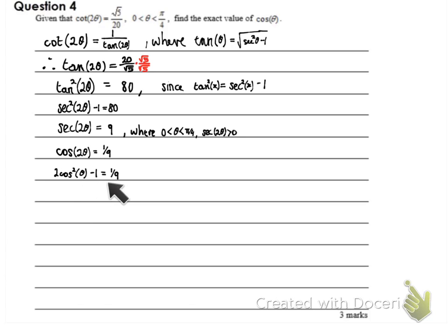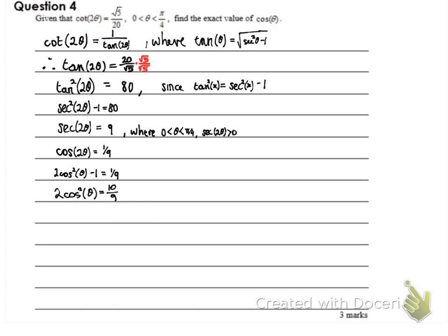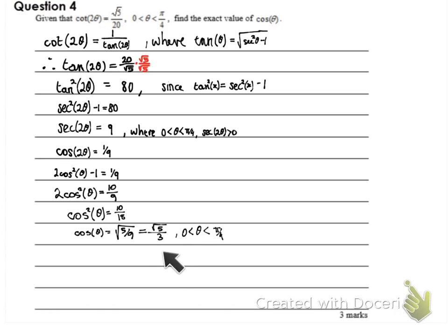Let's use the double angle formula for cos. Using 2cos²θ − 1, I chose that version because I'm after the exact value of cos θ. Adding one and dividing by 2 gives 2cos²θ. Taking the square root and simplifying, we get cos θ = √5/3. That's valid for the angle 0 to π/4.